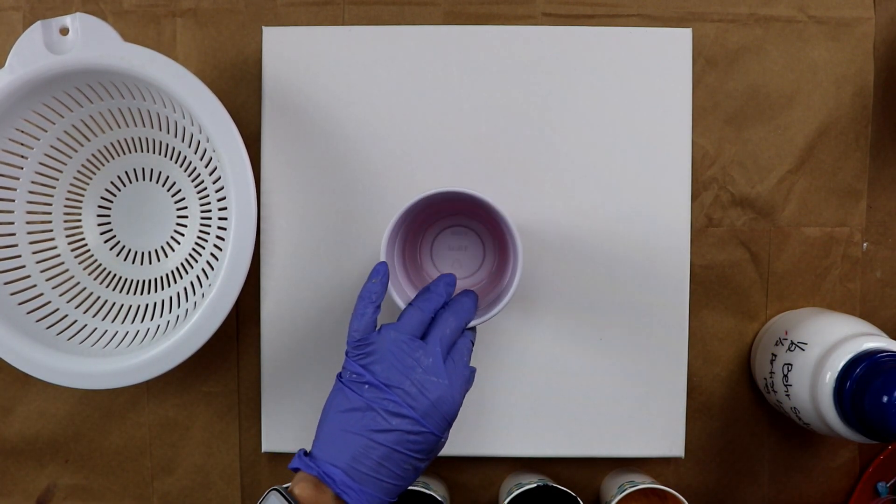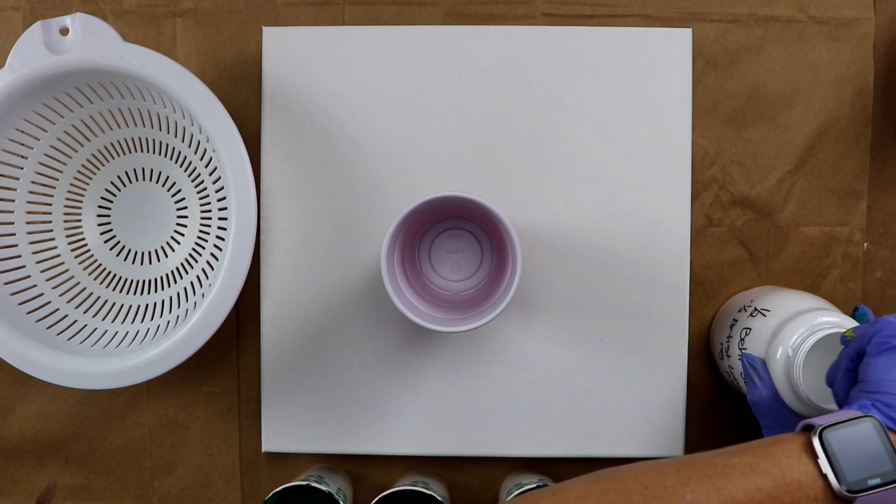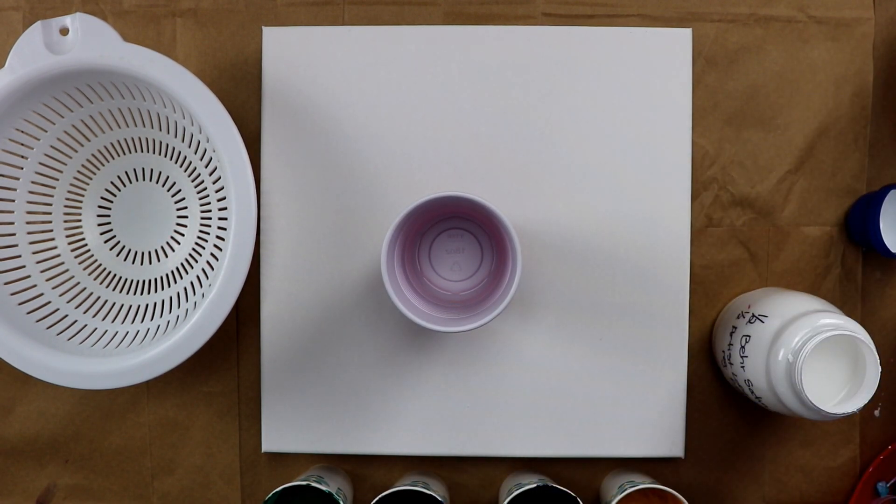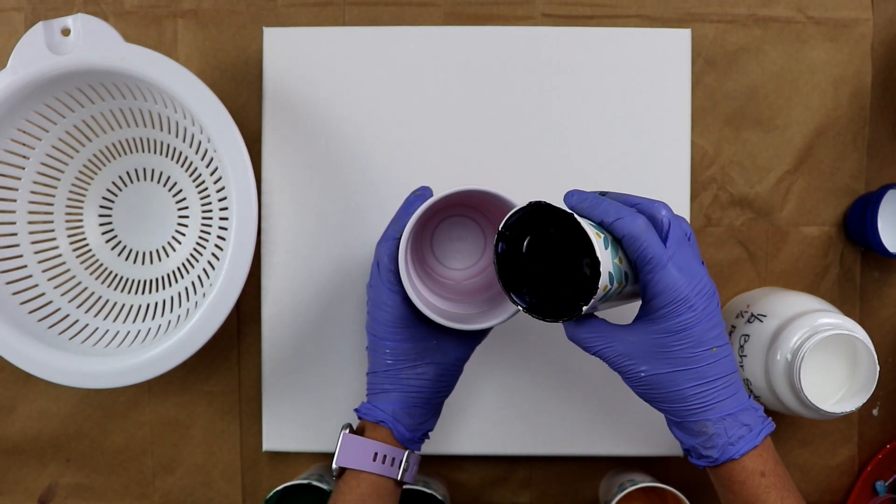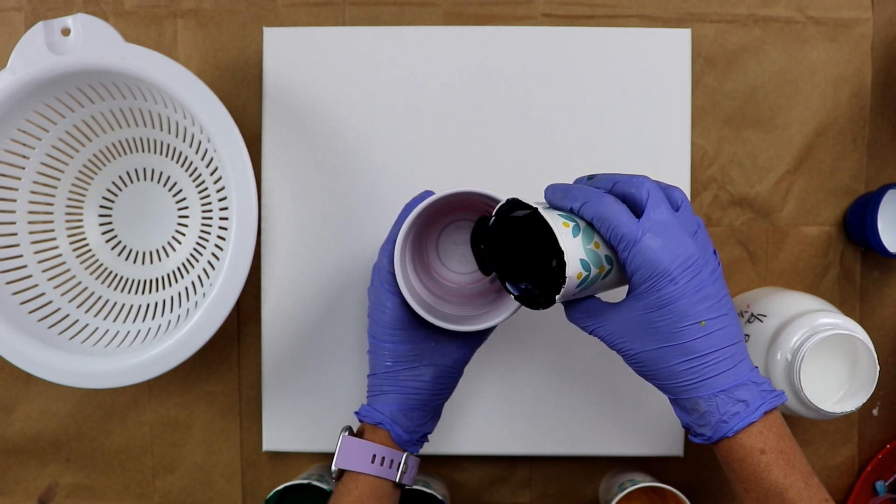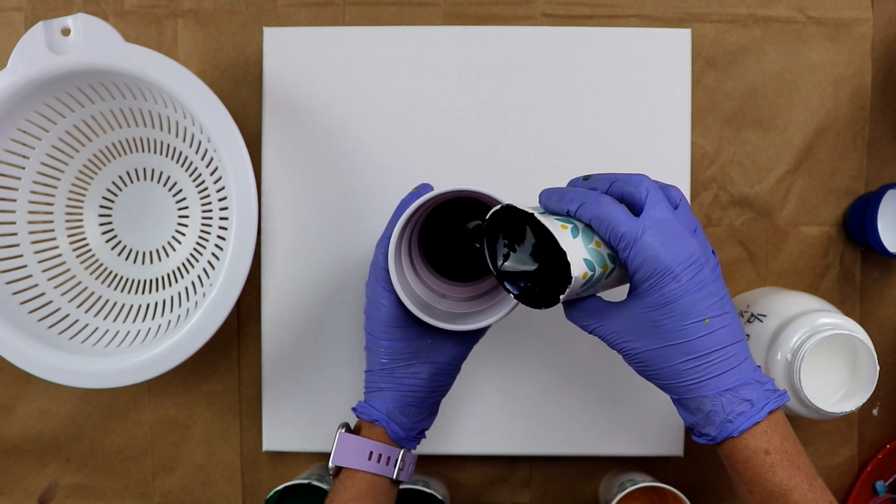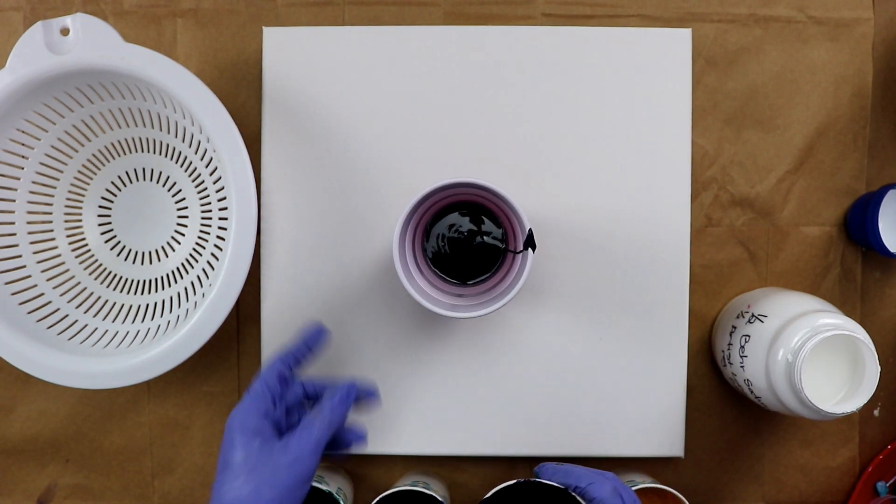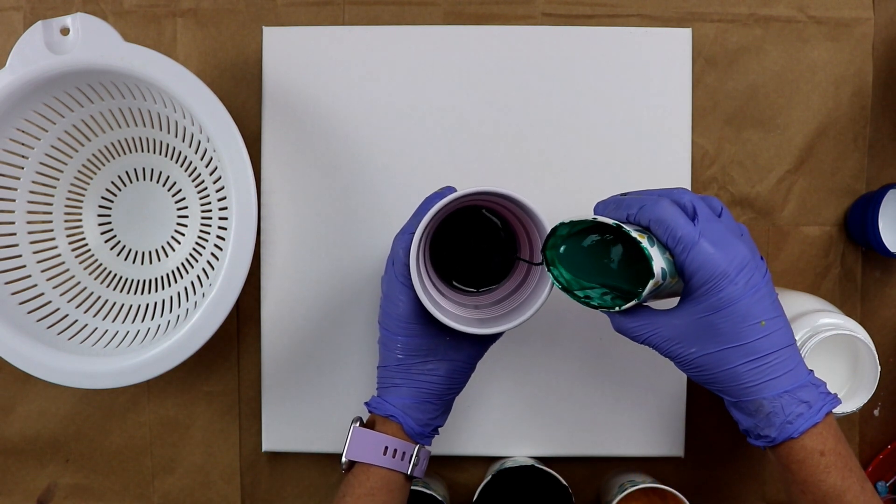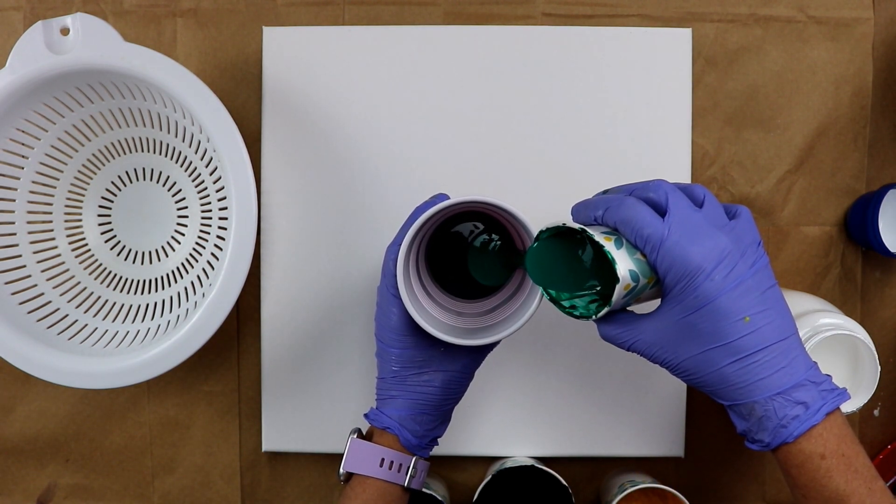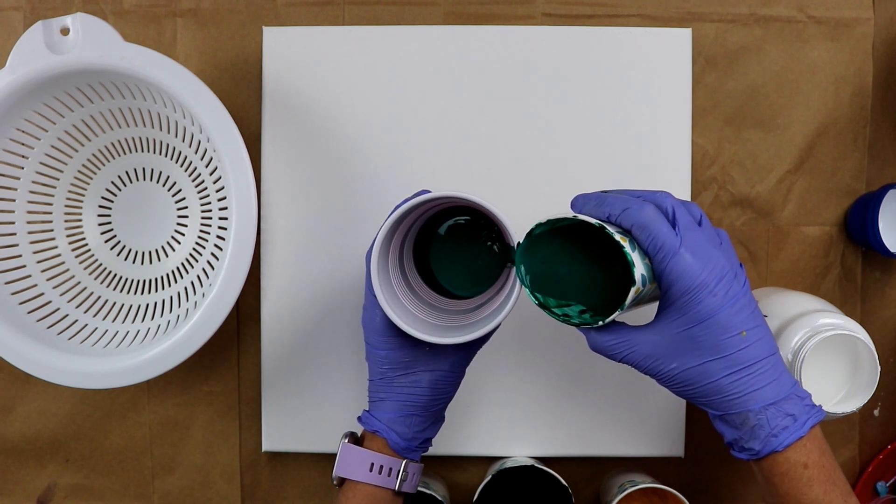I've got my cup here, and I'm going to get started putting the paint in. I think I'm going to start with the indigo first. I did not put any silicone in any of the paints. I did mix all of these with my normal pouring medium that I use, which is Liquitex, Floetrol, and Water.